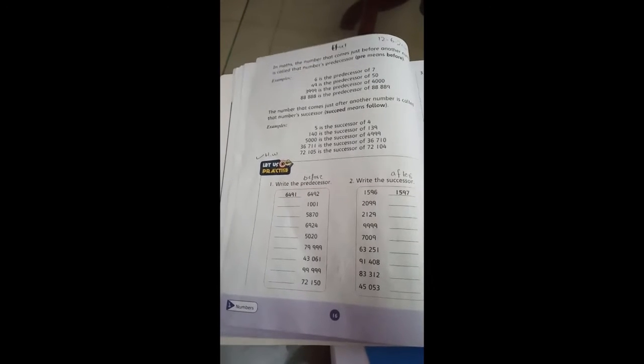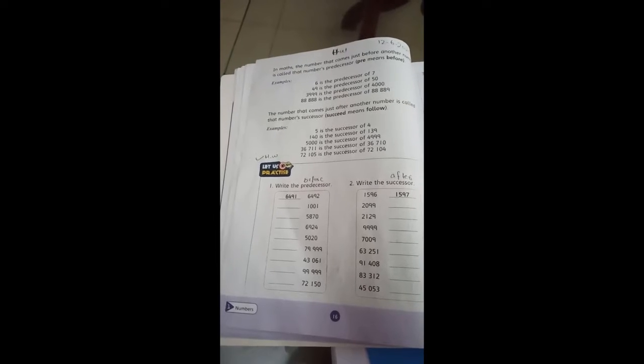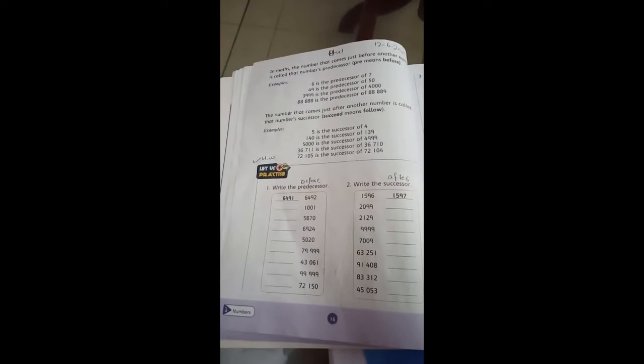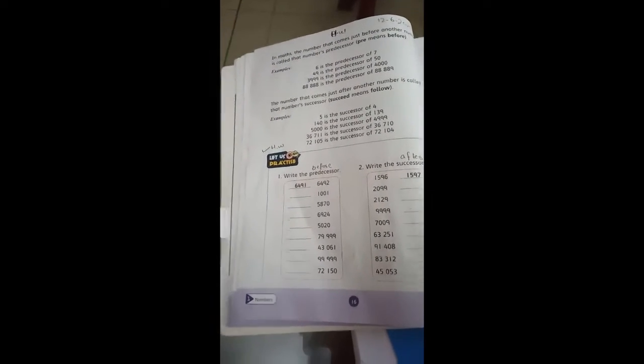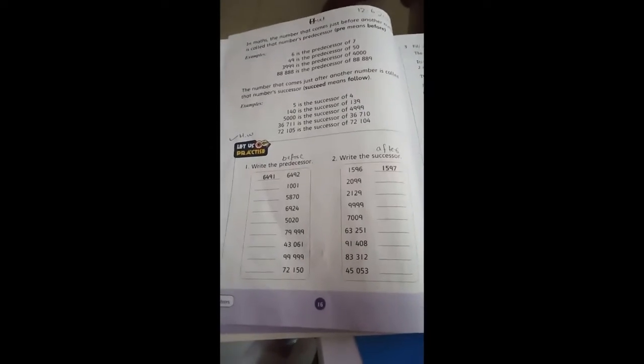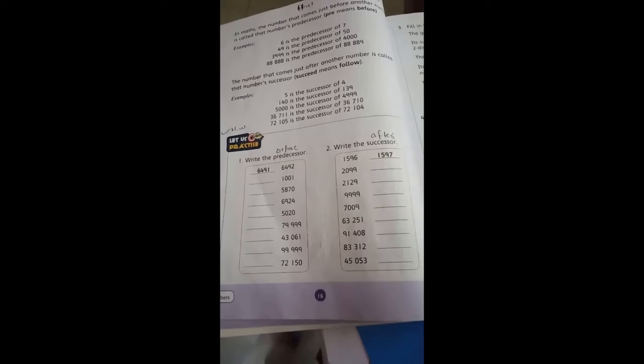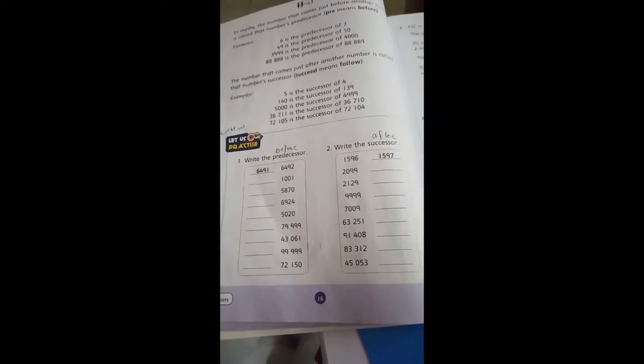So you need the concept of predecessor and successor. The chapter is related to your four, five, six digits, so you will find the predecessor and successor of four, five, or six digit numbers. The predecessor of 225 is 224, and the successor of 224 is 225. Page number 16, if you look at the exercise, let us practice. Let us read a little theory.